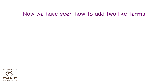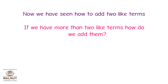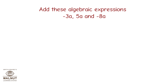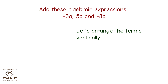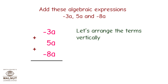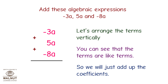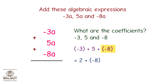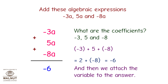Now we've seen how to add two like terms. If we have more than two like terms, we can arrange the terms vertically. Add: -3a, 5a, and -8a. Arranging vertically: -3a + 5a + (-8a). The terms are like terms, so we add the coefficients: -3 + 5 + (-8) = 2 + (-8) = -6. Attaching the variable, the answer is -6a.